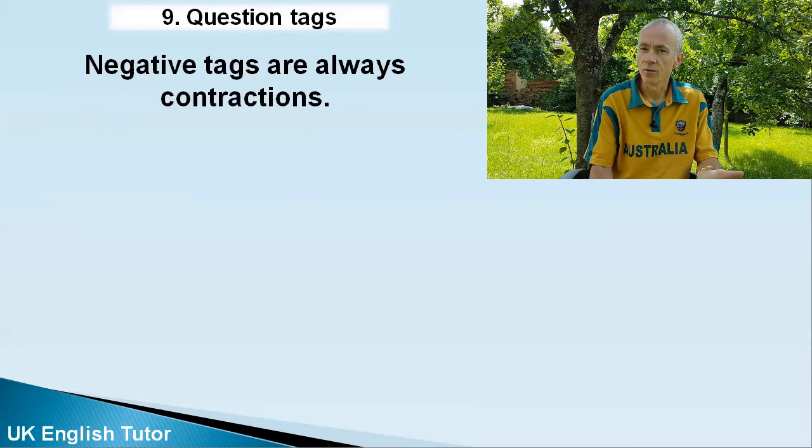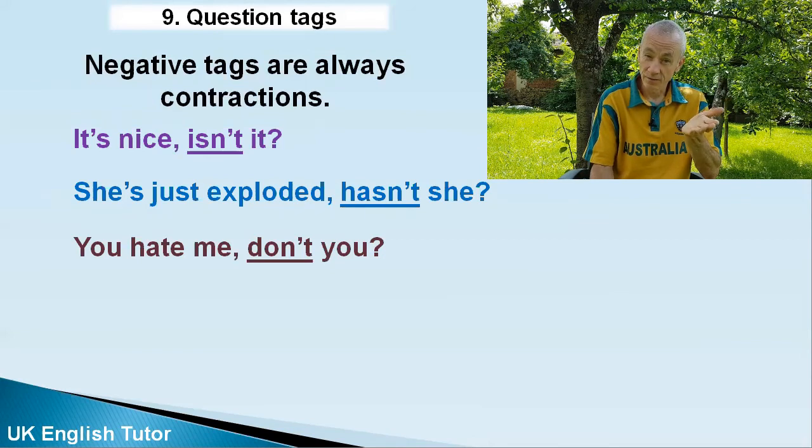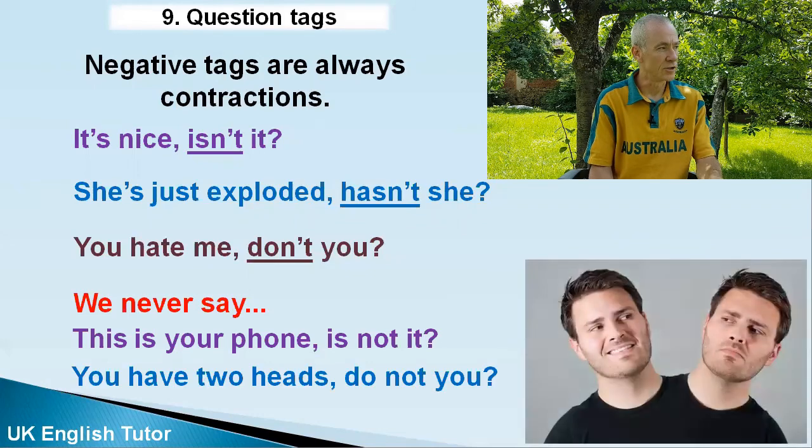There are even more uses for question tags. What I've covered so far are the main uses. Have you noticed that when the tag is negative and uses 'not,' they're all in contracted form? 'Wasn't it,' 'isn't it,' 'couldn't we.' 'It's nice, isn't it?' 'She's just exploded, hasn't she?' 'You hate me, don't you?' That's the rule — we never say 'this is your phone, is not it?' or 'you have two heads, do not you?'